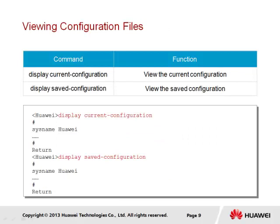Viewing the two configuration files used by VRP is achieved through the display current configuration and display saved configuration commands. The display current configuration will display commands that have been configured and are currently operational within VRP. If the device is restarted, the current configuration file will be lost and replaced with the saved configuration file if a saved configuration file exists. It is therefore necessary to save the configuration if the contents of the current configuration file are to be maintained. If the saved configuration file does not exist, a notice will inform of the fact. We show here the typical result of using these display commands.